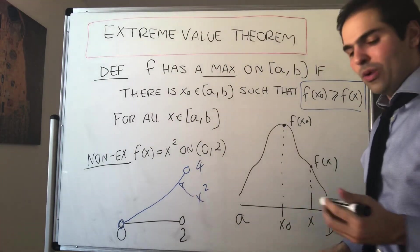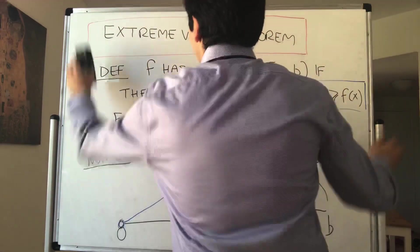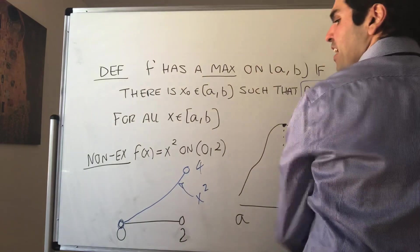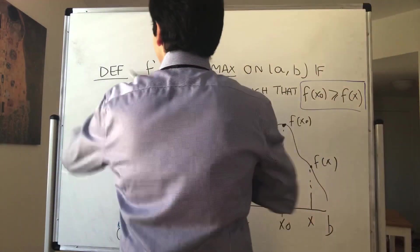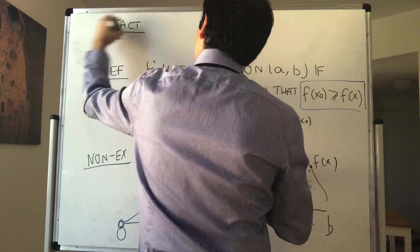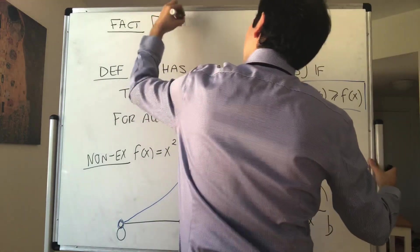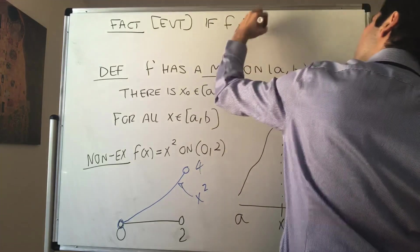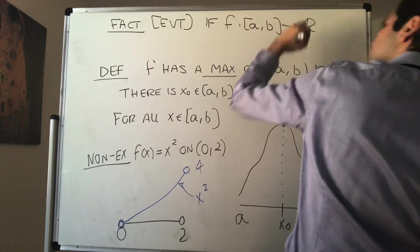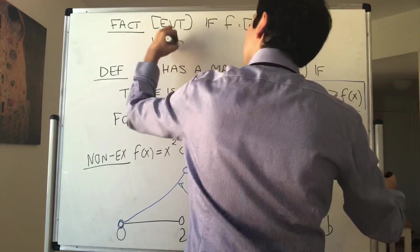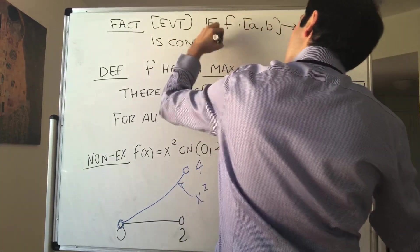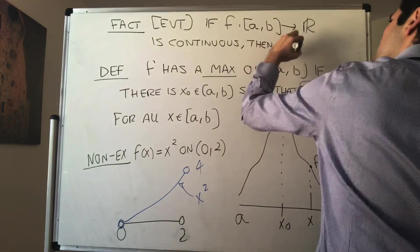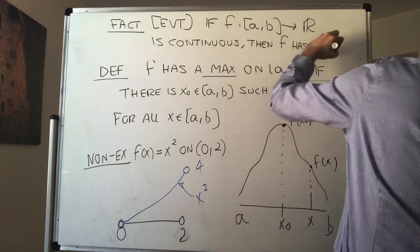Therefore, it's also important that you have a closed and bounded interval. Without further ado, let me state the extreme value theorem. If f from the closed interval [a, b] to the real numbers is continuous, then f has a maximum and also a minimum.